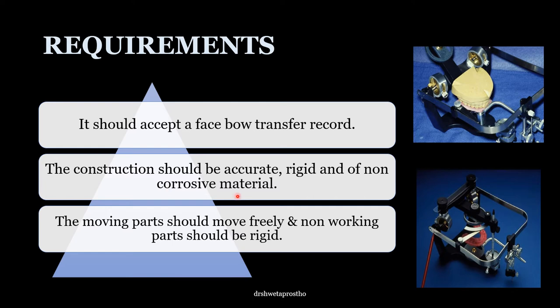They are commonly made of plastic or metal — aluminium and stainless steel both are used. The moving parts should move freely; they should not be stuck anywhere, and the non-working parts should be rigid. Besides these, some additional features like adjustable condylar guides, intercondylar distance, adjustment for the Bennett movement, and adjustable incisal guidance table make the instrument more precise and useful.